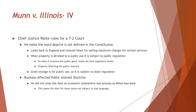Justice Field, joined by Justice Strong, said this is giving states all types of great powers. It goes against private property rights, under strained license to legislative will. We do have a democratic form of government, so elected representatives do stuff — but not according to Justice Field. This regulation violates the property rights of Mr. Munn and Scott. It's a restriction that devalues his private property, and there is no cause for this regulation.